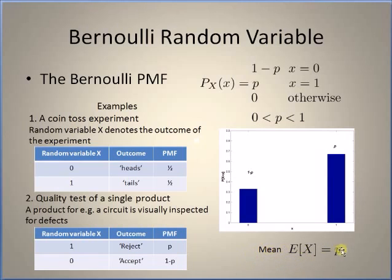...of a Bernoulli mass function is equal to p, which makes sense. For example, in the coin toss experiment when the coin is unbiased, you expect the probability of getting one of the outcomes to be equal to 1/2. That is what the mean value represents.